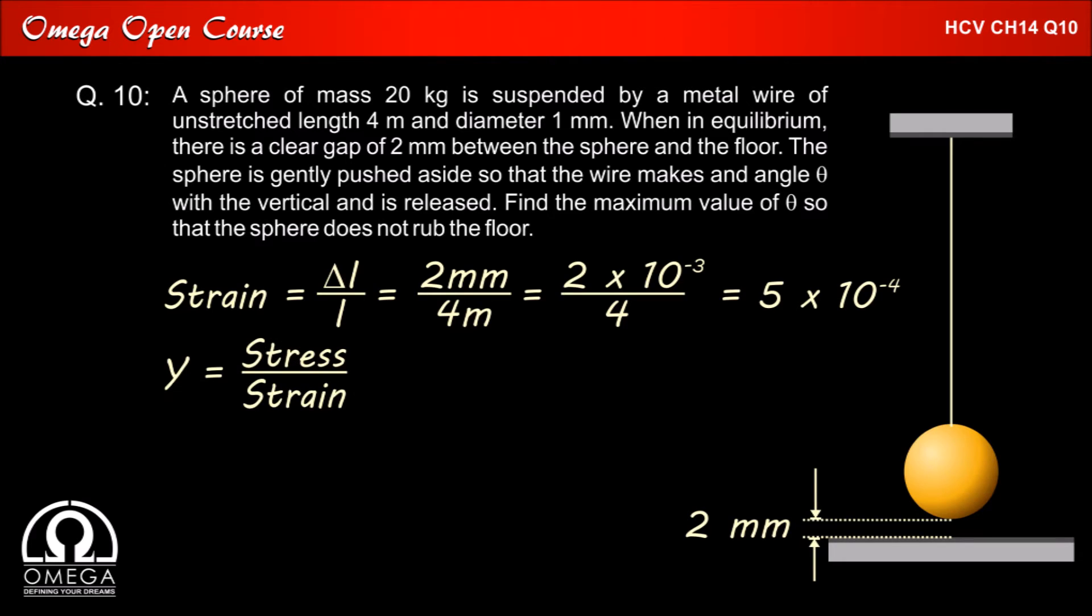Now Young's modulus Y is stress by strain. Therefore stress is equal to Y into strain which implies stress is equal to 2 x 10 to the power 11 x 5 x 10 to the power minus 4 which on calculation gives 10 to the power 8 N per meter square.